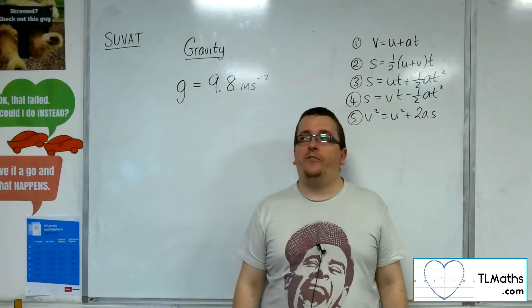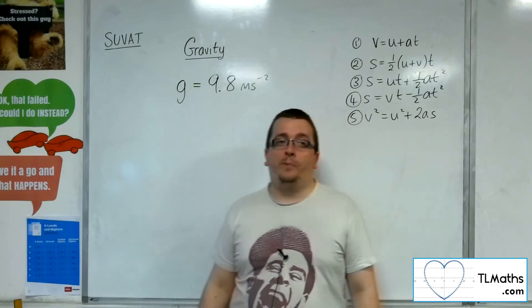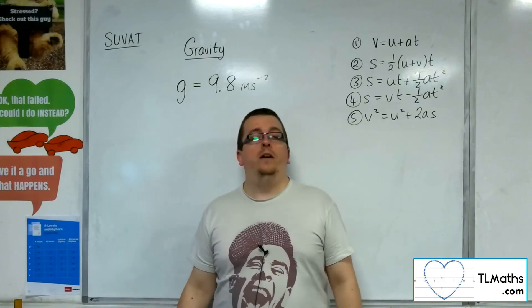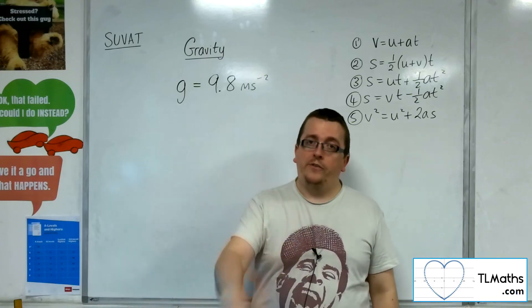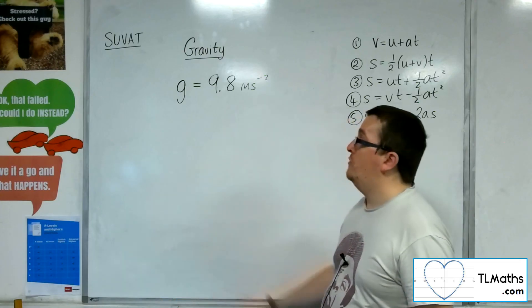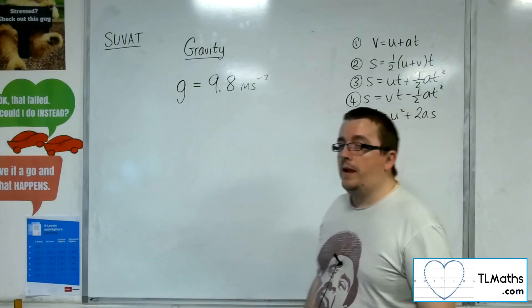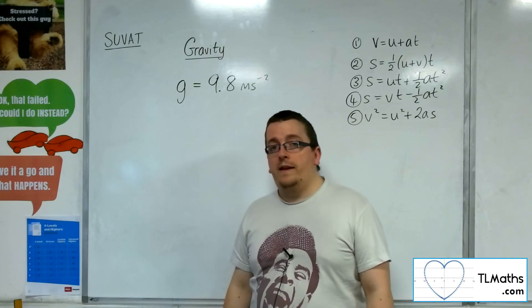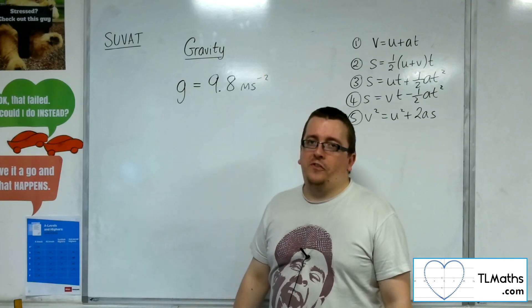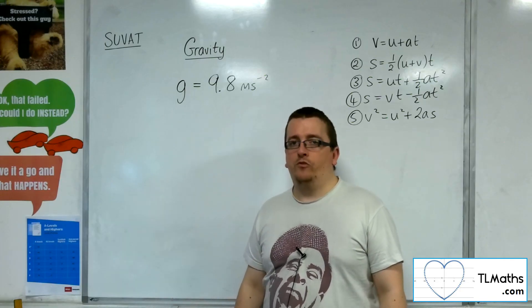If the question had set G as 10 metres per second per second, which it could, then your answers should be rounded to one significant figure because G had been rounded to one significant figure. So, just be aware of these little fiddly bits just to keep in mind when dealing with gravity.